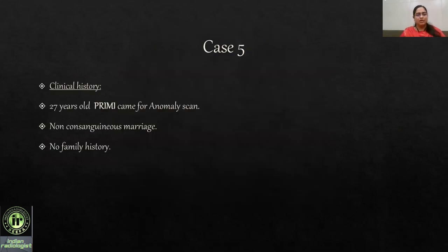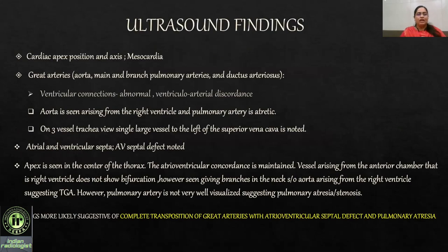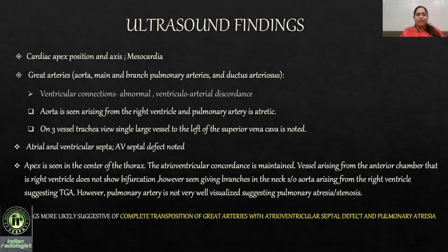Case 5: A 27-year-old primigravida came for an anomaly scan. Non-consanguineous marriage, no family history. The cardiac apex was centrally placed — mesocardia. The great vessels were abnormal with ventricular-arterial discordance: the aorta was arising from the right ventricle, and the pulmonary artery was atretic. On three-vessel view, a single large vessel — the aorta — was seen to the left of the superior vena cava. An AVSD was noted with atrioventricular concordance maintained. The vessel arising from the anterior chamber showed no bifurcation, confirming it as the aorta giving neck vessels. The pulmonary artery was smaller. Diagnosis: complete transposition of great arteries with atrioventricular septal defect and pulmonary atresia.